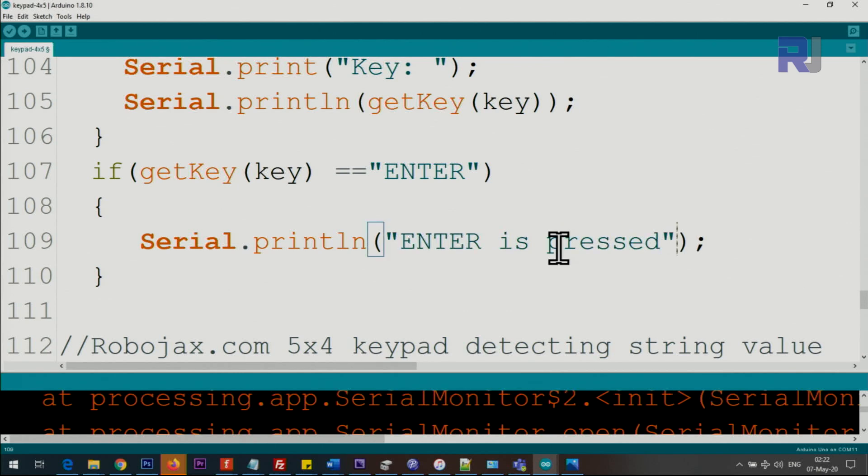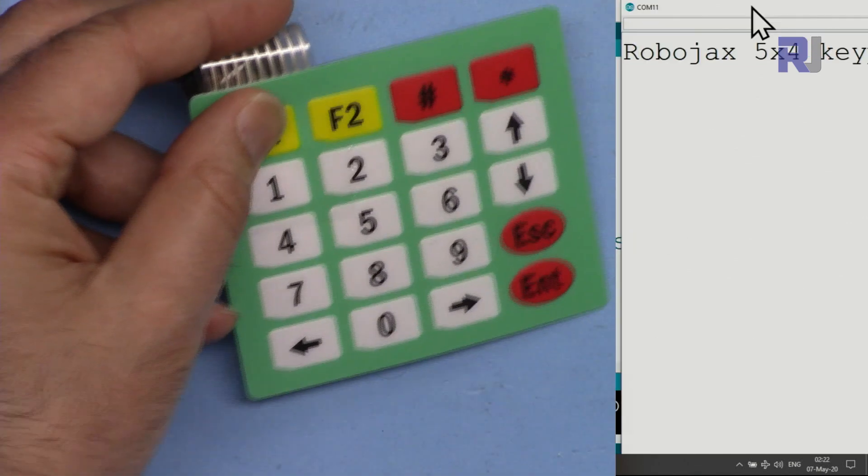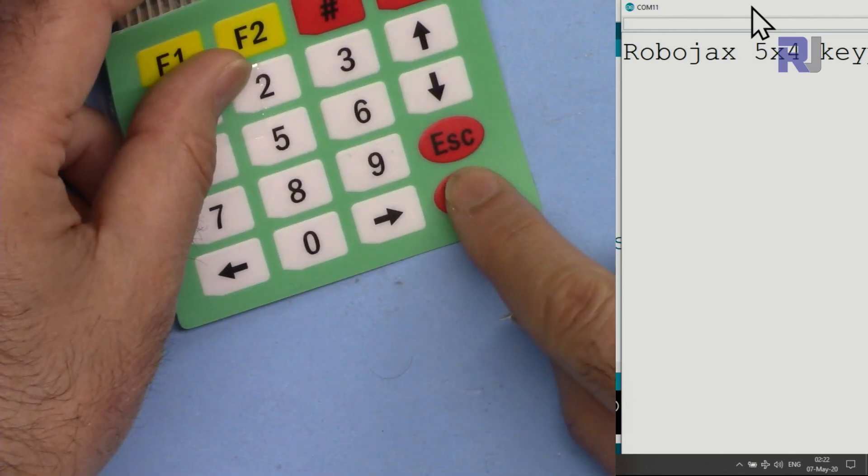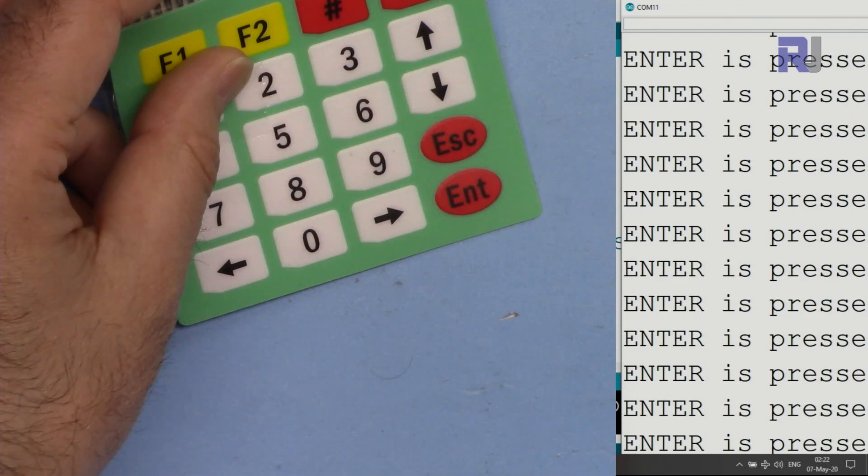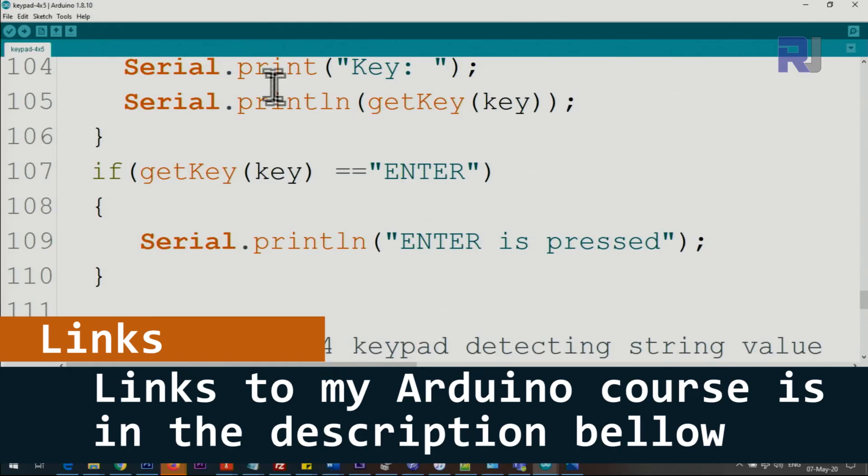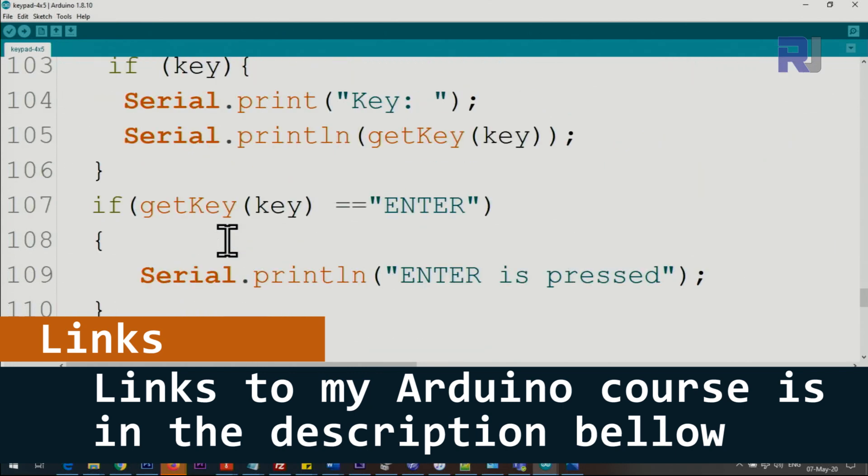So we can detect it like that. And here I'm pressing now enter, as you can see it reads it continuously because I do not put any delay. If you need full explanation of the code with everything, it is available as part of my Arduino course at udemy.com.